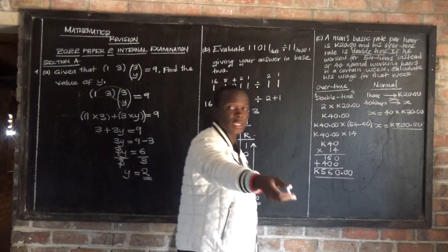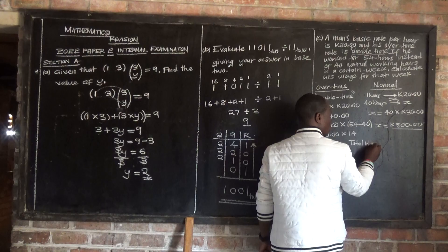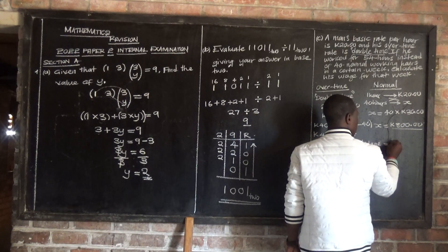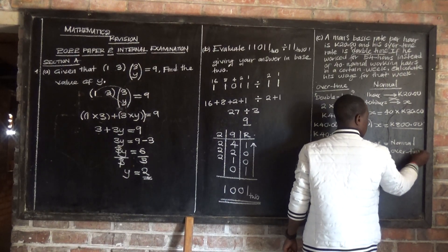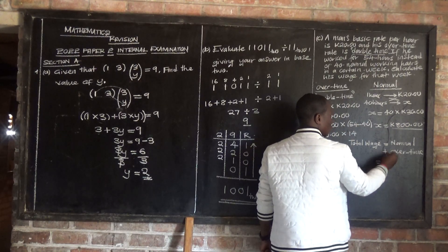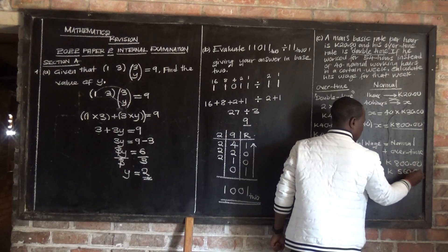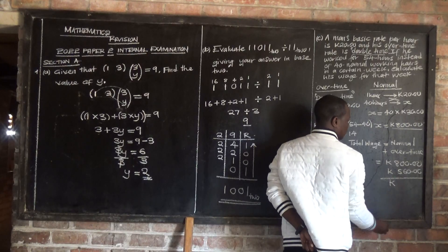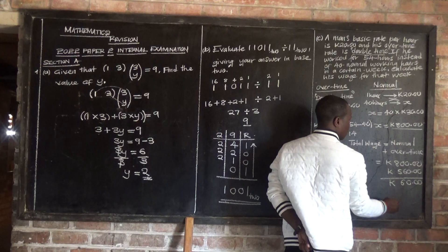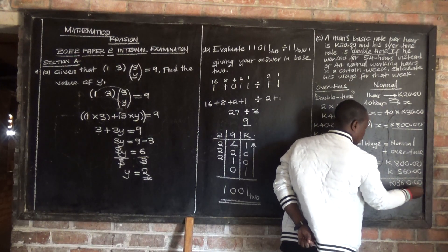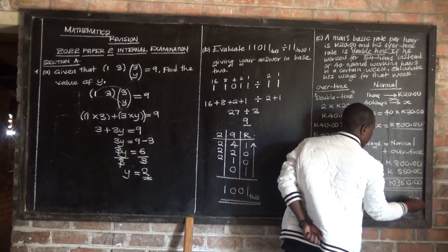Now we calculate his total wage by adding the normal pay plus the overtime pay. Total wage equals normal pay plus overtime pay. The normal pay was 800 cedis and the overtime pay was 560 cedis. Adding: 800 plus 560 gives 1360 cedis. So his total wage for that week was 1,360 cedis.